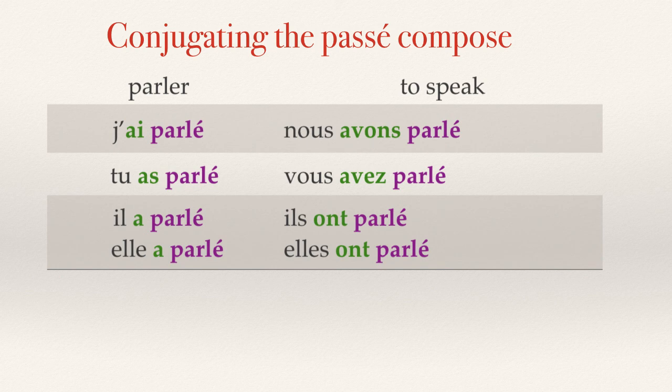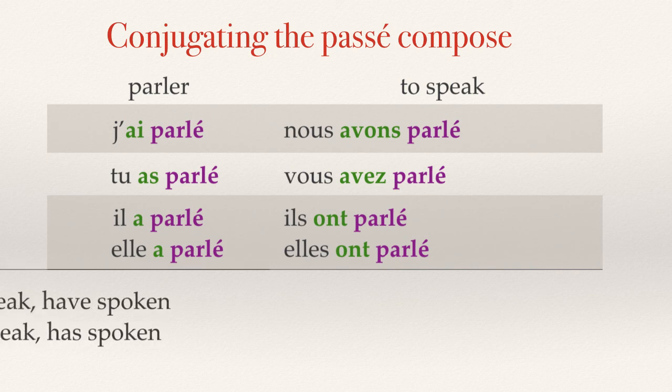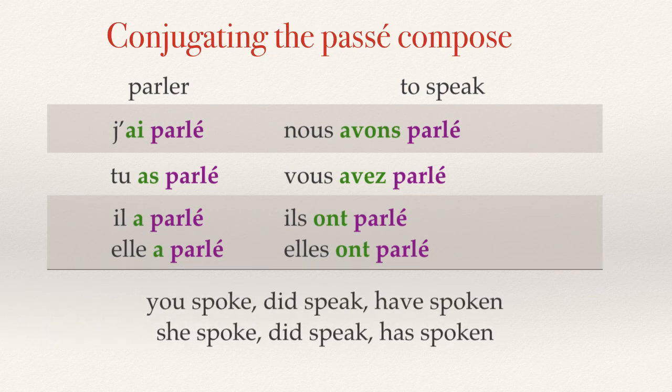Notice that our form of avoir changed throughout. Each of these is translated three ways: I spoke, I did speak, I have spoken. Tu as parlé and vous avez parlé are both translated: you spoke, you did speak, you have spoken. They will all follow the same format. Pause the presentation so that you can take notes, because this will be on a quiz.